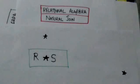Natural join is a binary operation. The general form of natural join operation on relations R and S is this.